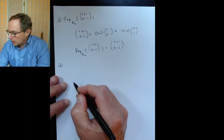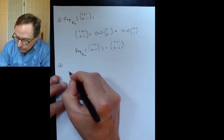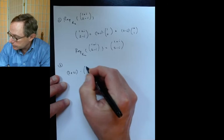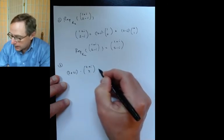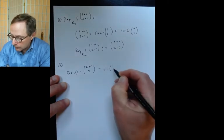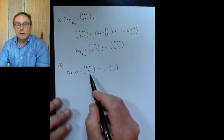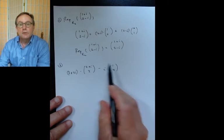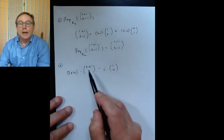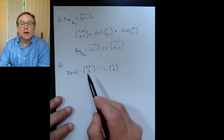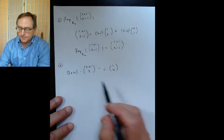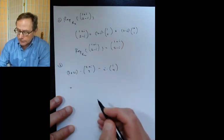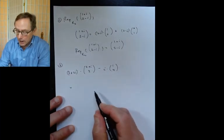Number two is a linear combination — the very heart of what it means to be a vector space. We have (3+2i) times the vector (2+i, 2) and then minus i times (1, 4). Note that 2, 1, and 4 are complex numbers — they're also real numbers, but they're also complex numbers. So this is a combination of scalars and vectors all within the two-dimensional vector space over the complex numbers.